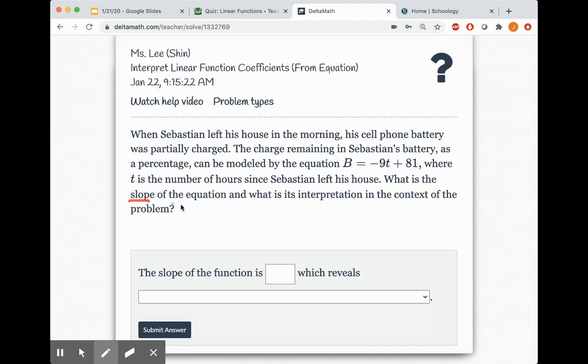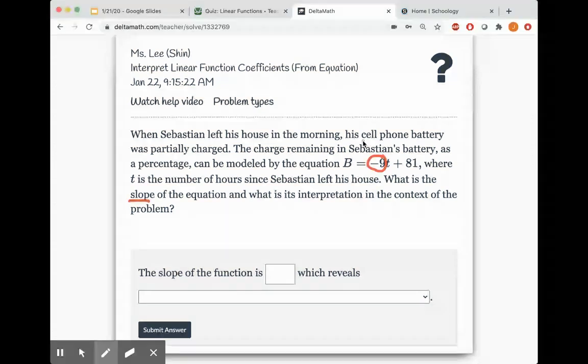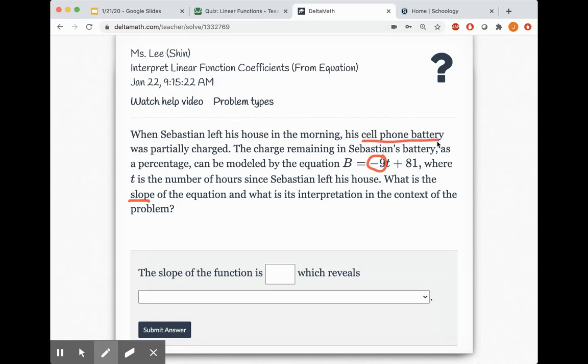What is the slope of the equation and its interpretation in the context of the problem? So in this equation, slope is negative 9. And what are we talking about? We're talking about his cell phone battery and how it's dropping after he left his house. So then looking at this equation, what does that tell us? T represents the number of hours. So then that means each hour, his cell phone battery is dropping 9%.